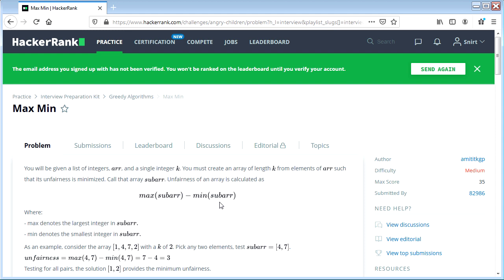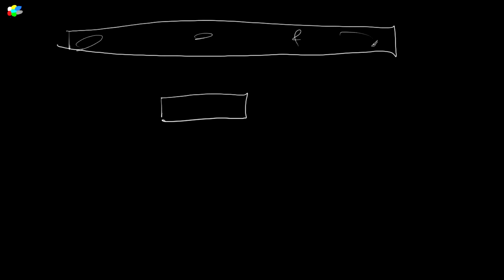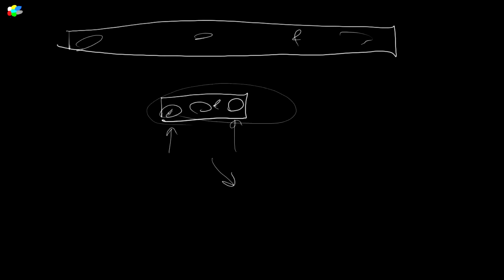So we want to minimize the biggest difference between different elements in our sub-array. Let's bring up pictures, because pictures are good. So we've got a big array with lots of values in it, and we want to select a sub-array choosing specific values such that the difference between the smallest value and the biggest value is the minimum possible. We select these elements such that the biggest difference in here is the smallest that we could possibly get. Seems straightforward.